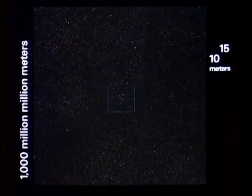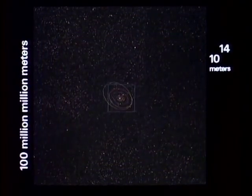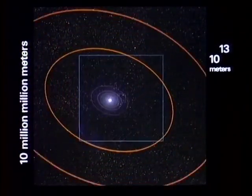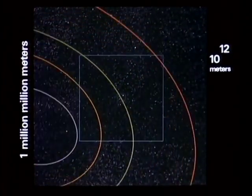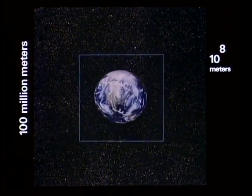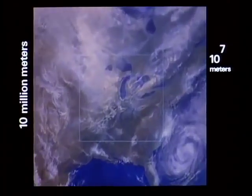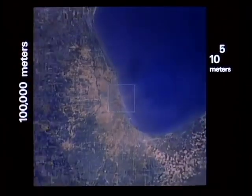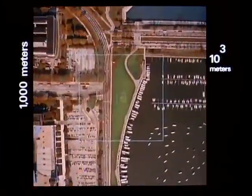10 to the ninth meters, 10 to the eighth, seven, six, five, four, three, two, one. We are back at our starting point. We slow up at one meter, 10 to the zero power.